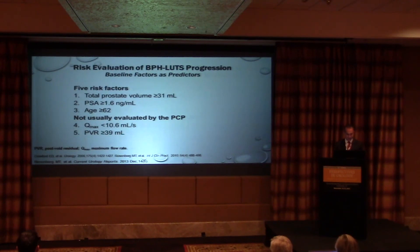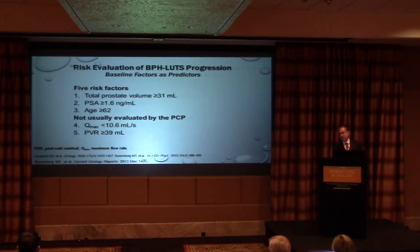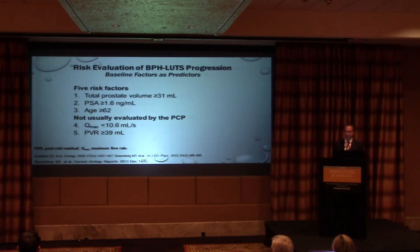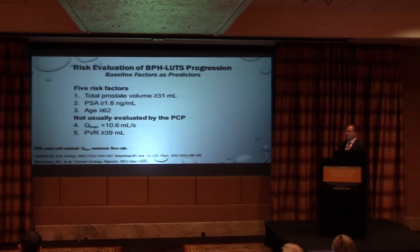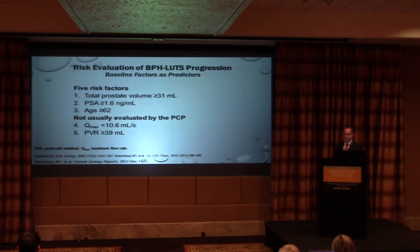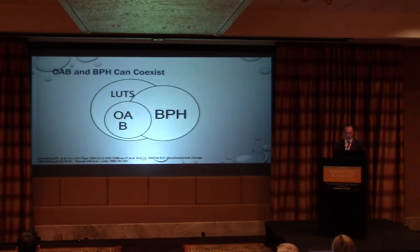This comes from one of Dave's papers — the risk evaluation for BPH. If you have these five risk factors, it's predicted your prostate will become more symptomatic: a total prostate volume of 31, a PSA of greater than or equal to 1.6, age of 62 — things a primary care doctor can readily assess. We don't generally do flow rates, although I tell people if you can write your name in the snow in script as opposed to Braille, you're probably doing fine. A post-void residual of greater than 39 is also a risk factor.